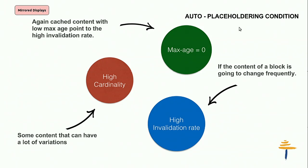The conditions for auto-placeholdering are: high cardinality — content that has a lot of variation, like fetching a Twitter feed from a third party — and high invalidation rate, where a block is constantly changing. Also, content with a really small cache max age has a high invalidation rate. These are the categories BigPipe uses to differentiate what content on your site is actually dynamic.